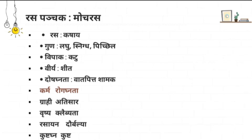Regarding Karma and Rogagnata — action and indication — it has Grahi and Stapana Karma, that is why it is indicated in Atisara and Athyartava. It has Vrishya Karma, indicated in Klibyata, and as a Rasayana it is a well-known drug for nourishing the body, indicated in Daurbalya. Regarding Kushtagna, the Kantakas are Kushtagna in nature, helping to get rid of acne and its marks, indicated in Kushta — skin disorders.